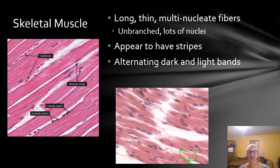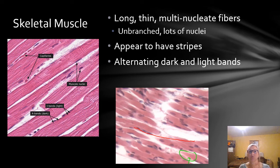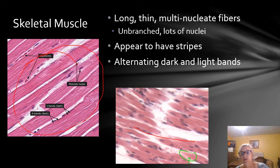Skeletal muscle — you can really see those alternating dark and light bands, the striations, very well. These are very long, thin, and multinucleate — they have lots of nuclei, visible as purplish marks. They do not branch. We have alternating dark and light bands, sometimes described as looking striped. We have special names for those bands: A bands are dark, and I bands are light. You are definitely going to need to know that for your exam.